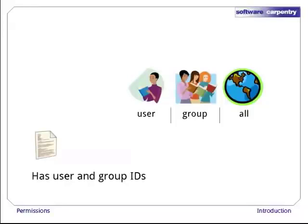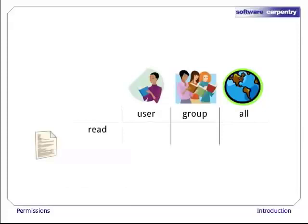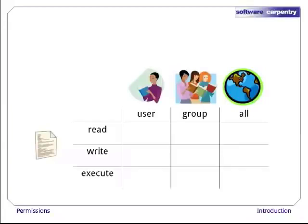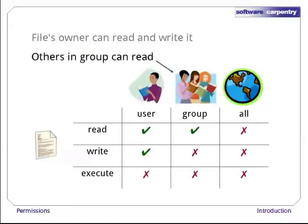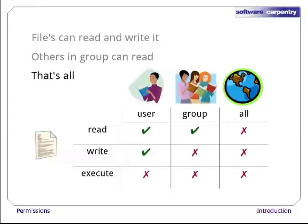For each of these three categories, the computer keeps track of whether people in that category can read the file, whether they can write to it (i.e., modify the file), and whether they can execute it (i.e., run it if it's a program). For example, one file's permissions might be on or off as shown in this table. This means that the file's owner can read and write it, but not run it. Other people in the file's owning group can read it, but not modify it. And nobody else can do anything with it at all.